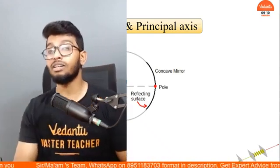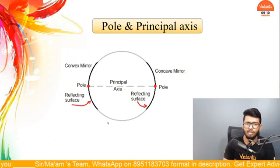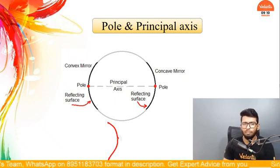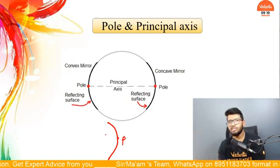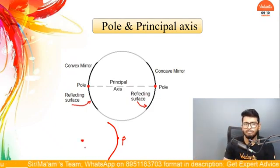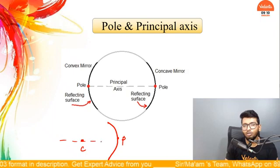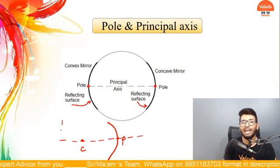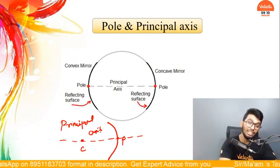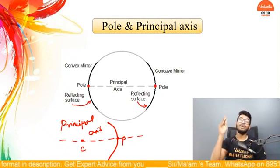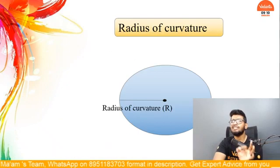The next component you must understand is the principal axis. Imagine I have a concave mirror — the pole is the midpoint of the mirror. The center of curvature is the center of the original sphere. A straight imaginary line passing through both the center of curvature of the mirror and the pole of the mirror — that is what is known as the principal axis.